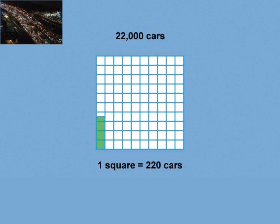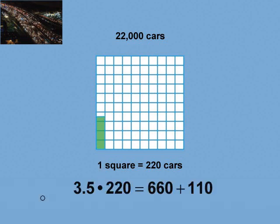This 10 by 10 grid represents the 22,000 cars. Each individual square represents 220 cars. Here we shade in 3.5 squares. So we multiply 3.5 by 220, which can be done without a calculator. 3 times 220 is 660. Add these numbers to get 770. So 770 cars are hybrid.